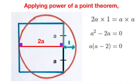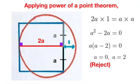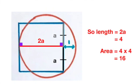Now, we can apply power of a point theorem and see that 2a times 1 must equal a times a. Solving the quadratic equation gives a equals 2 as the only sensible answer. And so since the length is 2a, we have side length of a square equals 4. And so the area of a square equals 16.